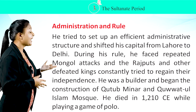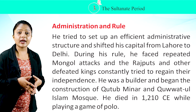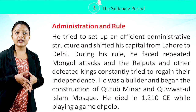He tried to set up an efficient administrative structure and shifted his capital from Lahore to Delhi. During his rule, he faced repeated Mongol attacks, and the Rajputs and other defeated kings constantly tried to regain their independence. He was a builder and began the construction of Qutub Minar and Quwwatul Islam Mosque. He died in 1210 CE while playing a game of polo.